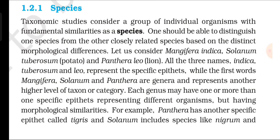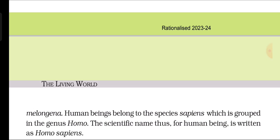Species: Taxonomic studies consider a group of individual organisms with fundamental similarities as a species. One should be able to distinguish one species from other closely related species based on distinct morphological differences. Consider Mangifera indica (mango), Solanum tuberosum (potato), and Panthera leo (lion). The names indica, tuberosum, and leo represent the specific epithets, while Mangifera, Solanum, and Panthera are genera representing a higher level of taxon. Each genus may have one or more specific epithets representing different organisms with morphological similarities. For example, Panthera has another specific epithet Tigris, and Solanum includes species like nigrum and melongena. Human beings belong to the species sapiens grouped into the genus Homo — the scientific name for human beings is Homo sapiens.